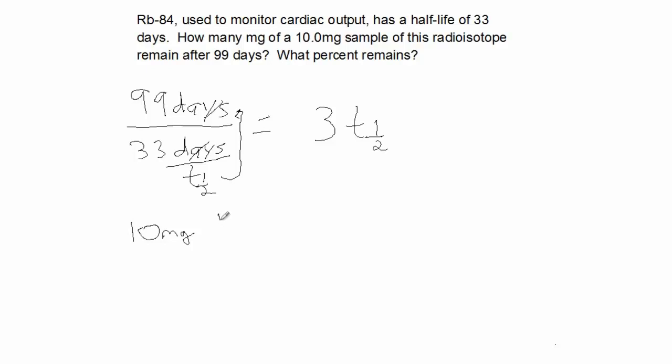You could do it all in one step by simply doing this: one half to the third, which will give you 1.25 milligrams. Or you could do it step by step.